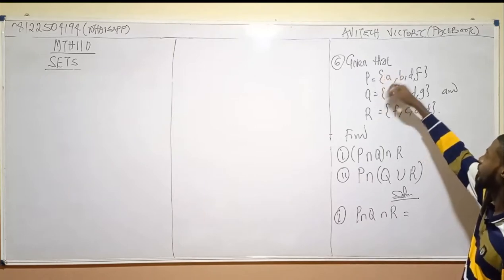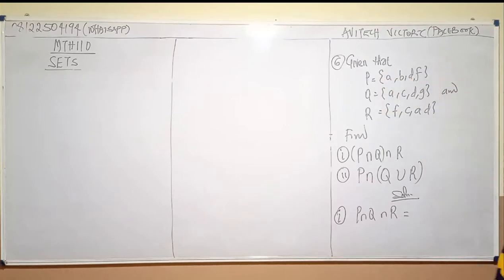I'll look at this: P, Q, and R. What is common between the three of them? Who can tell me? A and what? A and D. Okay. Destiny, do you agree with that? Yeah. Okay, so that's A and D.